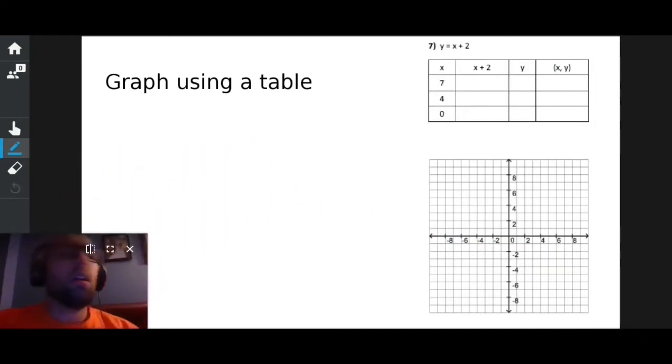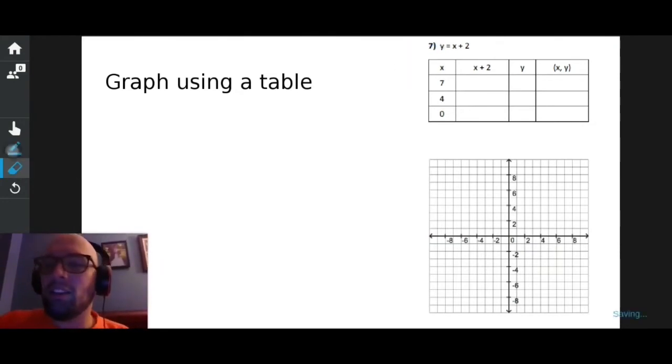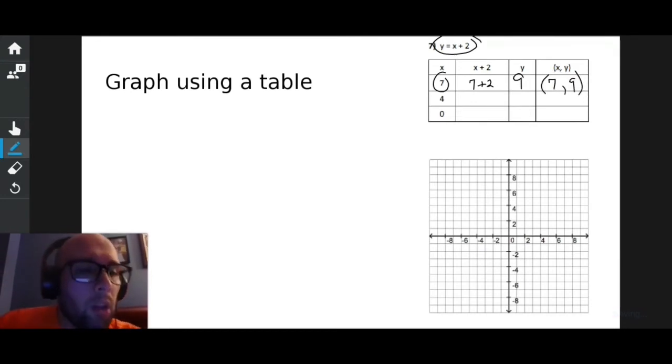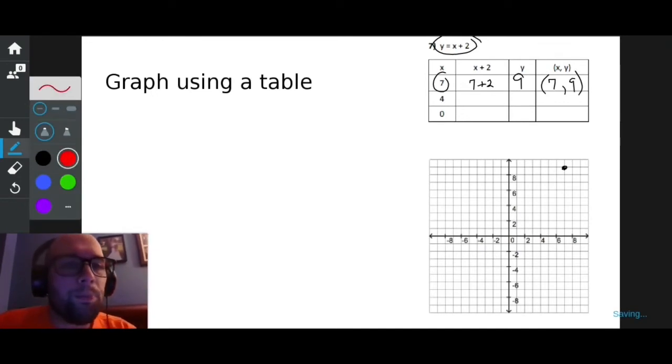This is asking me to fill out this chart based off of that equation right there. Get a Y, get a point graph. So if my equation is Y equals X plus two and X is seven, I could say seven plus two, which is nine. And since my X value was seven and my Y value was nine, I have the point seven, nine. So let's write that out. Seven is right. Seven up nine.